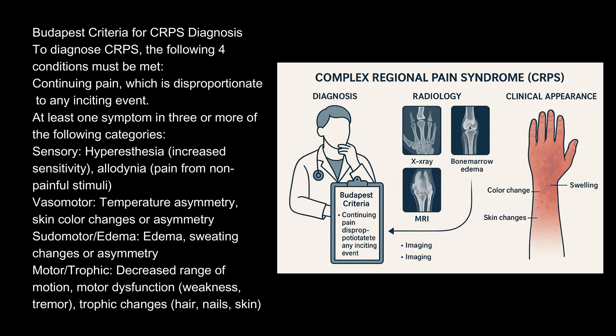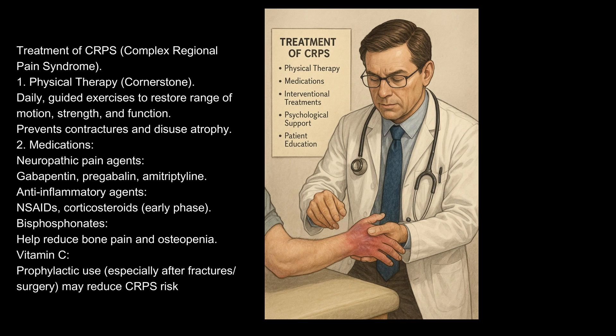Budapest Criteria for CRPS diagnosis. To diagnose CRPS, the following 4 conditions must be met: continuing pain disproportionate to any inciting event; at least one symptom in 3 or more of the following categories — sensory (hyperesthesia, allodynia), vasomotor (temperature asymmetry, skin color changes), pseudomotor/edema (sweating changes or asymmetry), and motor/trophic (decreased range of motion, weakness, tremor, trophic changes to hair, nails, or skin).